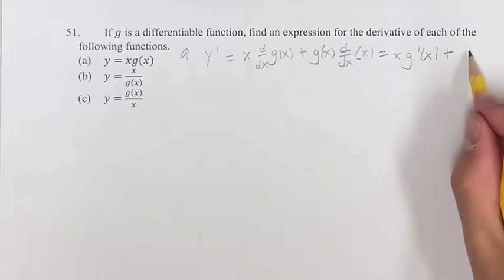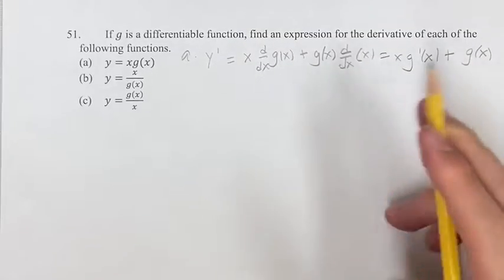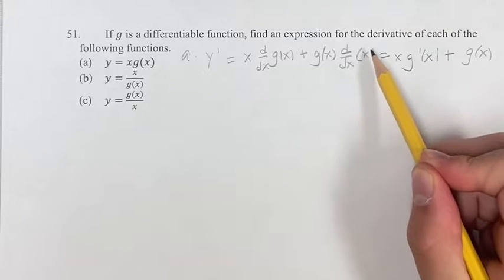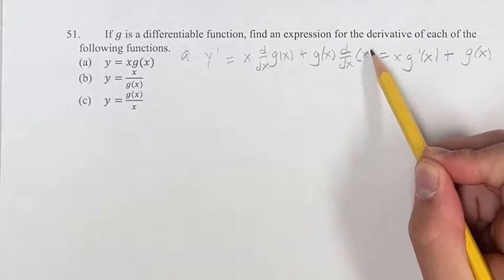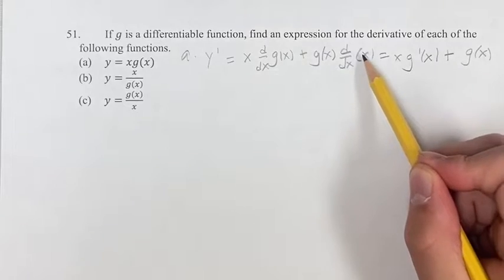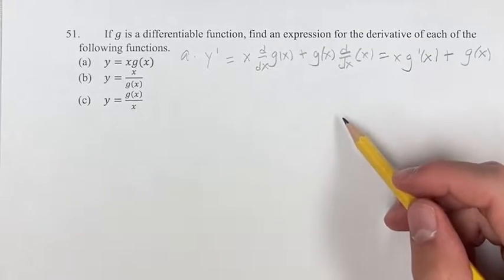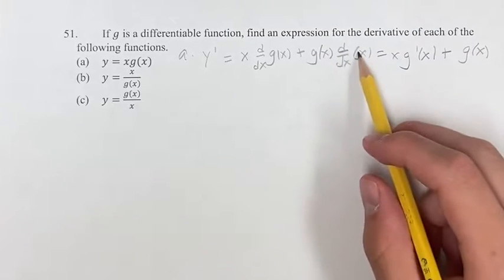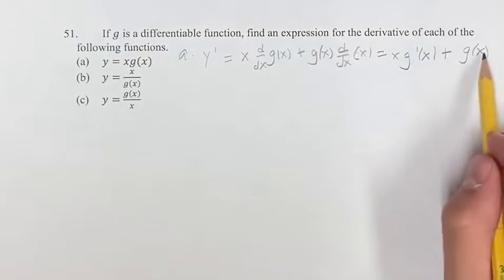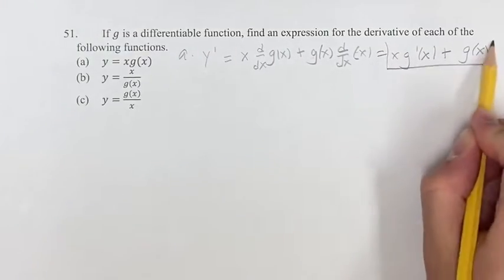plus g of x times the derivative of x. The derivative of x, since we have a linear term, is just its coefficient, and we just have x here, so that's 1x, so the derivative is 1. So this is 1 times g of x is just g of x, so this is our final answer.